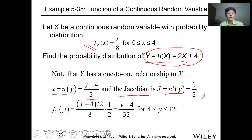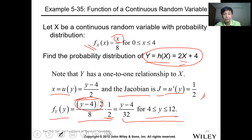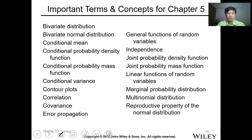By the transformation, substitute x equals (y minus 4)/2 into f(x) and multiply by the Jacobian value of 1/2. Replace the x expressions with y. When x equals 0, y becomes 4; when x equals 4, y becomes 12. So the resulting density function of y is expressed in terms of y over the interval from 4 to 12.